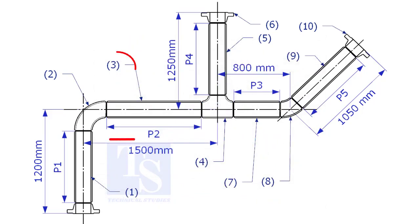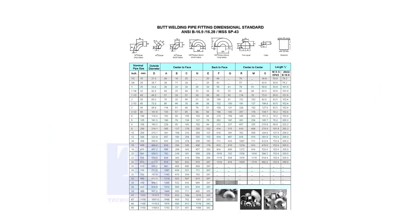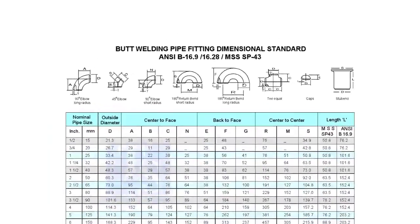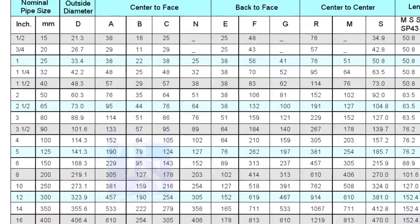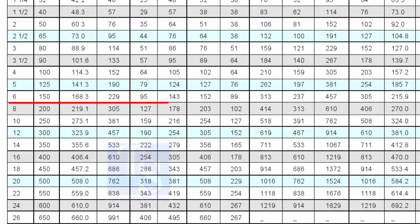Let us calculate the length of item number 3. We already know the takeoff length of the 6 inch long radius elbow. Now, check the chart for the takeoff length of the equal T. It is 143mm.